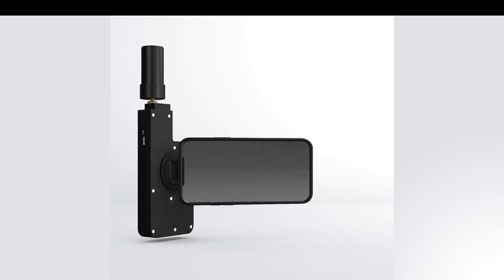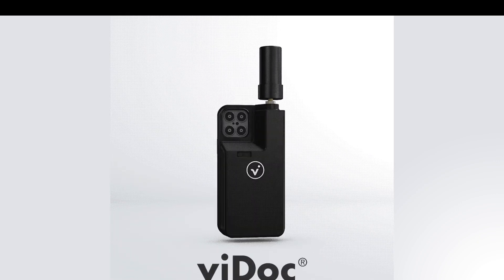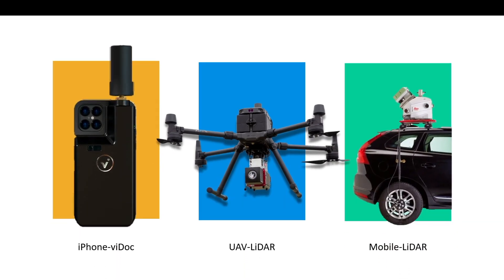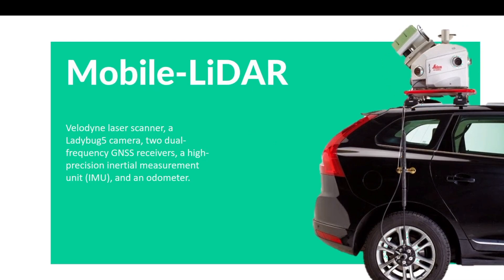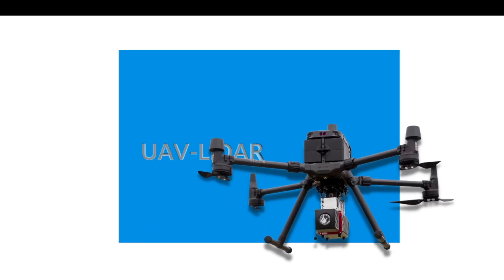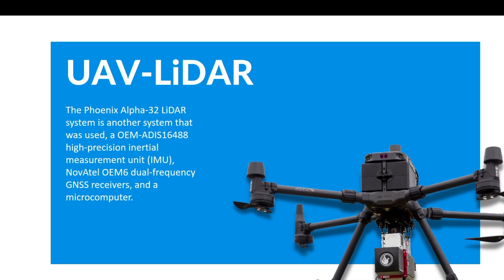This sensor in particular is the Viadoc RTK rover, created by a German company called Viagram in partnership with Pix4D to create a mobile mapping system for your iPhone. For this study, we utilized three different systems: the iPhone with the Viadoc, a UAV LiDAR, and a mobile LiDAR system. For the mobile mapping, we used a Velodyne with the Ladybug 5 camera as well as a GNSS receiver with an IMU. For the UAV LiDAR, this was a Phoenix Alpha 32 with an OEM IMU sensor and a Novatel GNSS receiver.